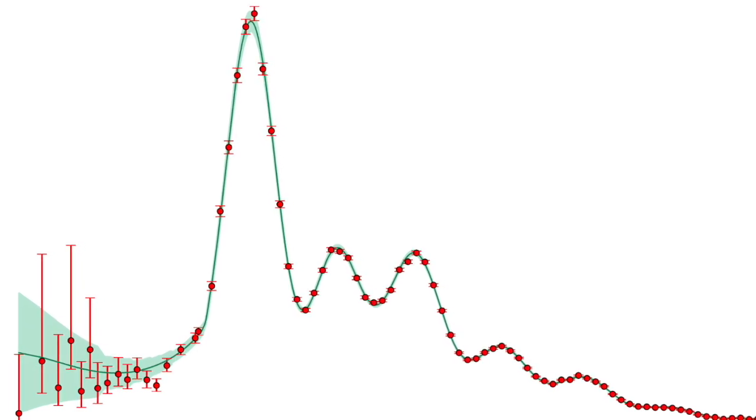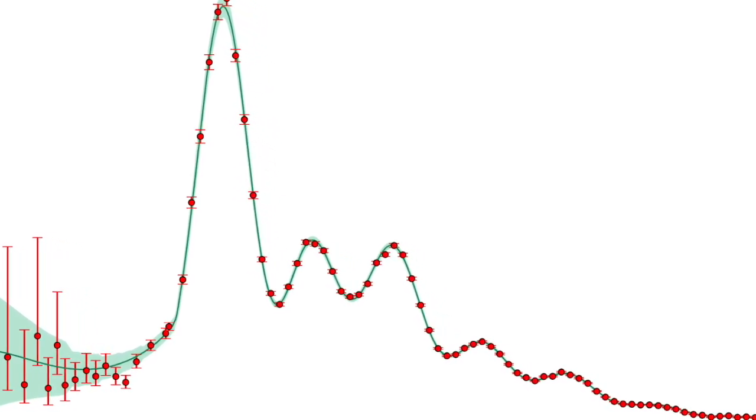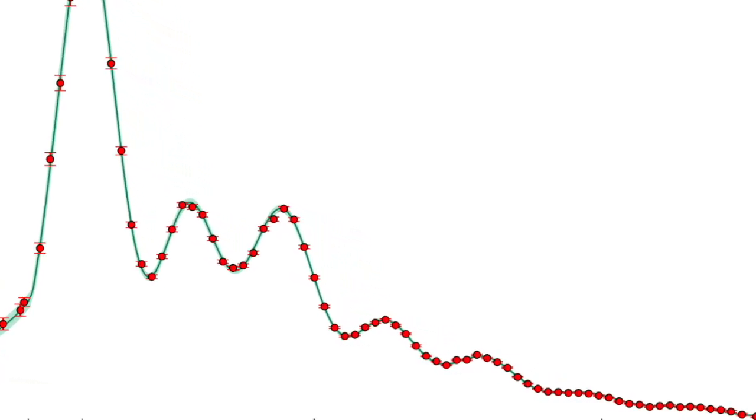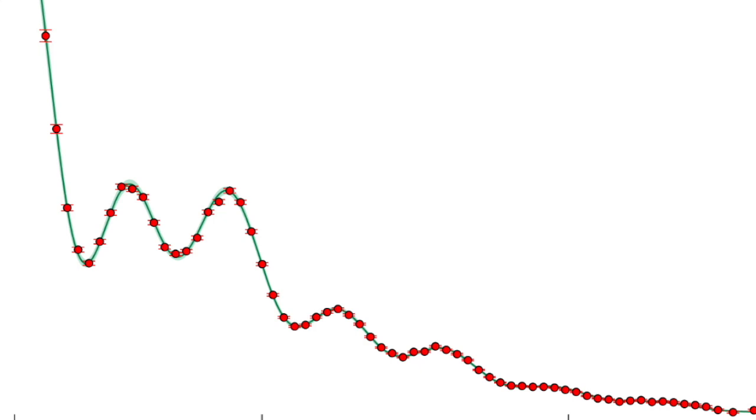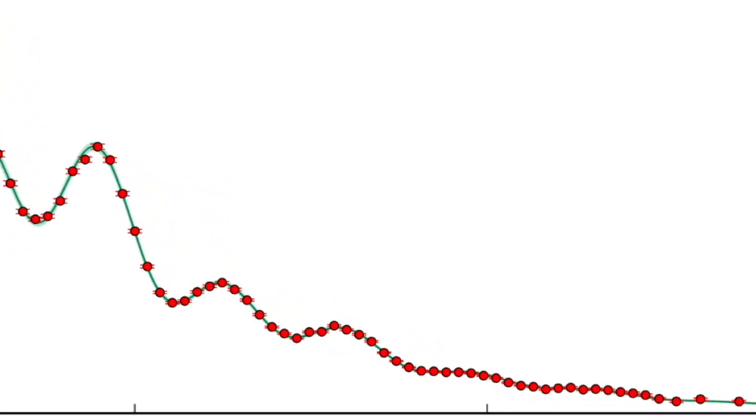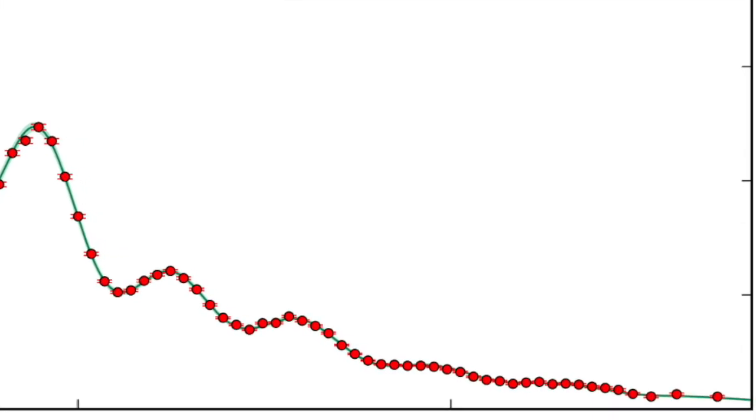The red dots and associated error bars are the actual measurements from the Planck satellite in 2018. As you can see, this is not some arbitrary fit. The calculated prediction matches exactly with every peak and slope of the real world data.